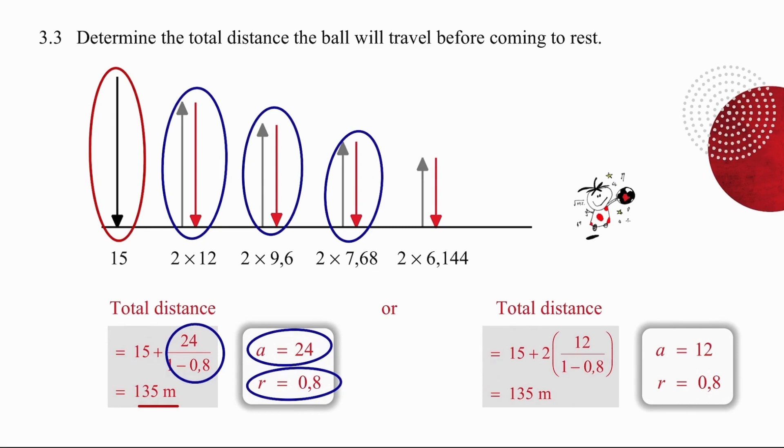The second option is that you don't double the way we did with the first option. You leave the a value as 12. You will still have an r value of 0.8 and into your sum to infinity you simply substitute 12 and 0.8. Then you double the result because you know that each time the ball goes up it has to come down the same amount. Doubling that result and then adding 15 will give you 135 meters as well.